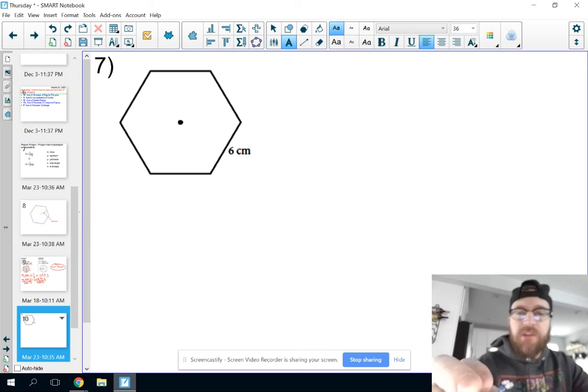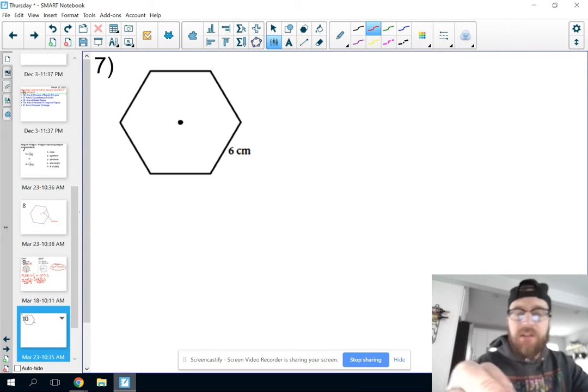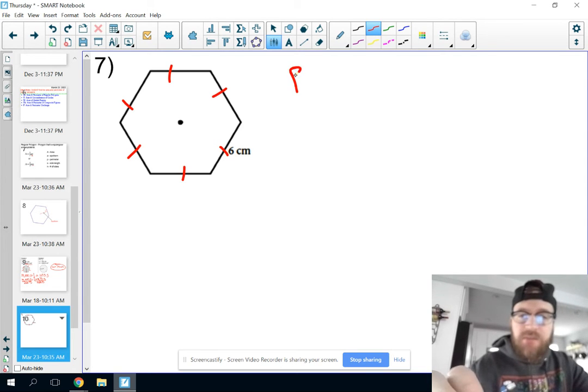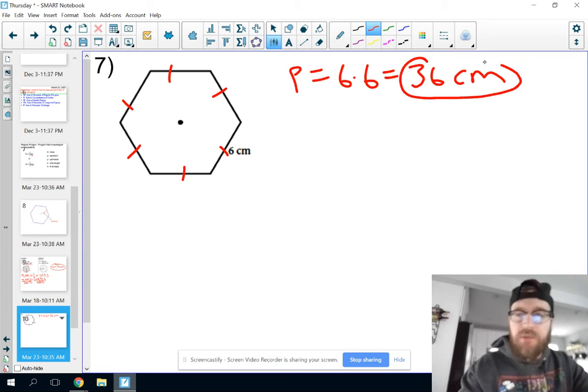Perimeter is not too bad because we know this is a regular polygon, all our problems are. So we know all the sides are going to be congruent. So if one side is 6, all of them are 6. So that part is not too bad. Perimeter equals 6 times 6.